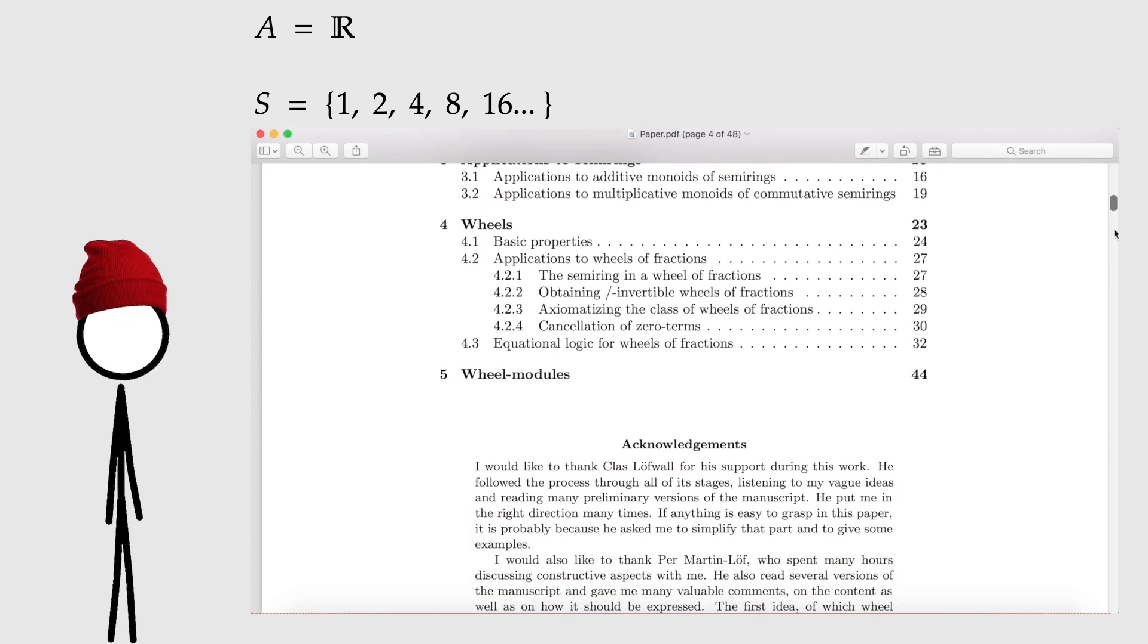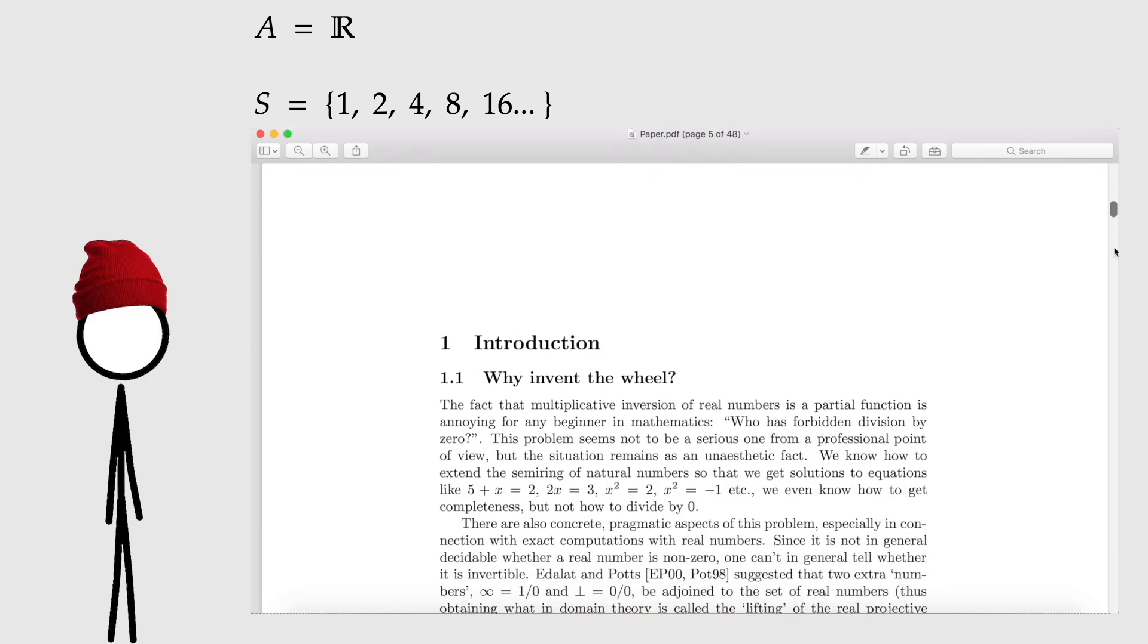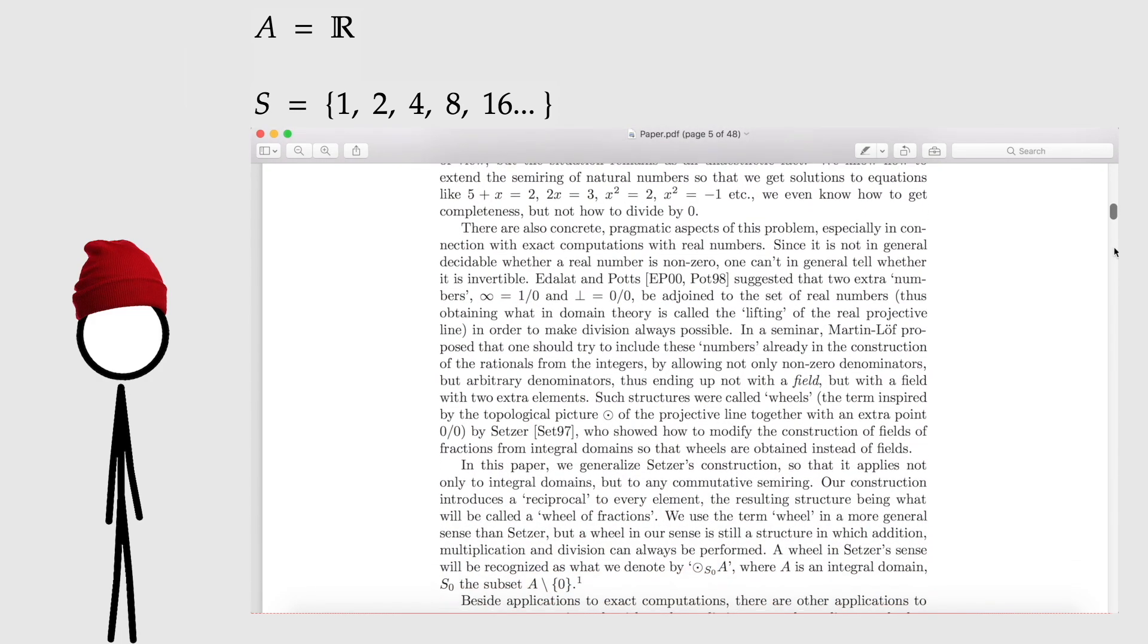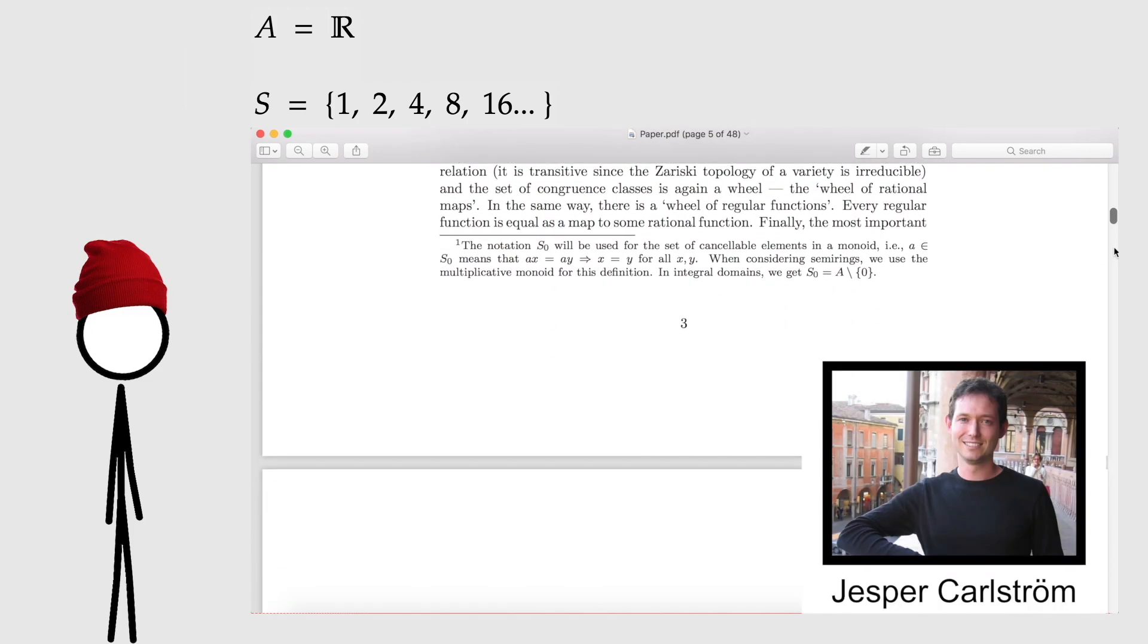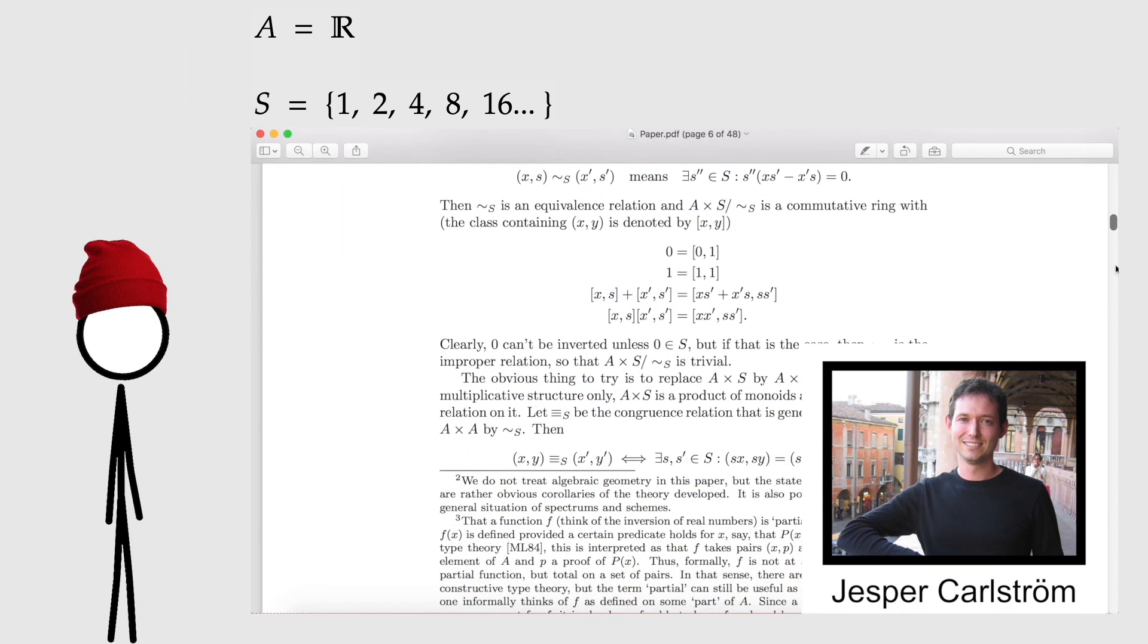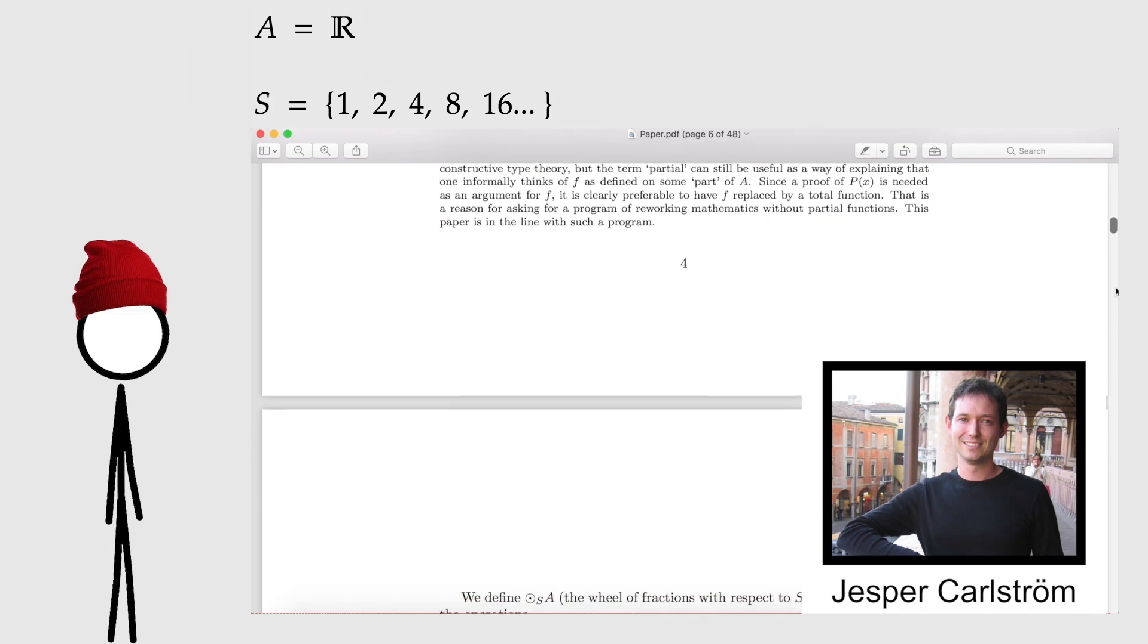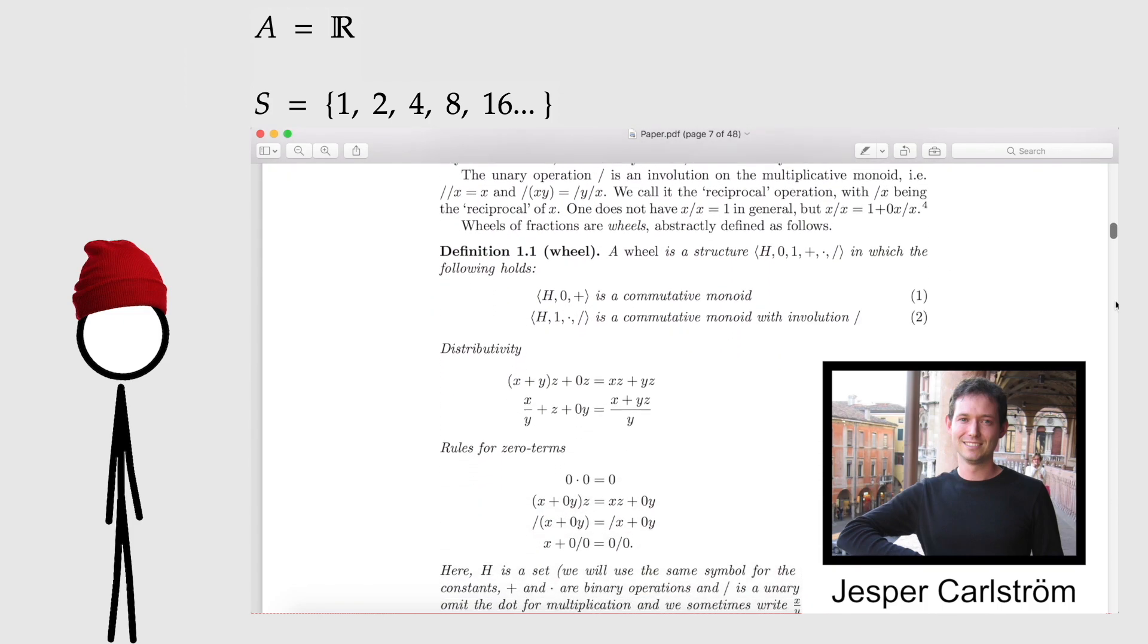In fact, I could only find a single paper online that actually went into any real detail about it. 48 pages. Yeah, I wasn't kidding when I said it's just one guy somewhere. His name is Jesper Karlstrom. This dude. What a legend. If you're watching this, Jesper, hello! Congratulations, you made it on YouTube. Hooray!